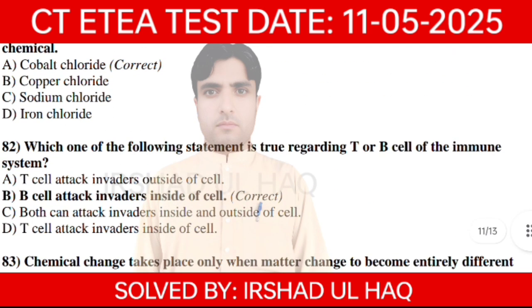Question 82. Which of the following statements is true regarding T or B cells of the immune system? Option number B: B cells attack outside of cells.